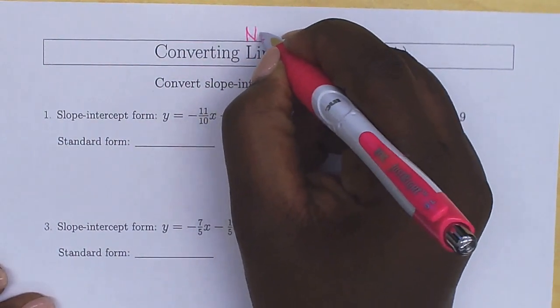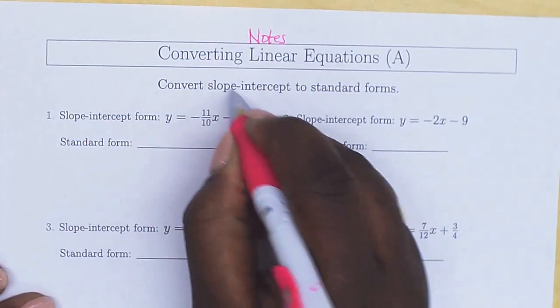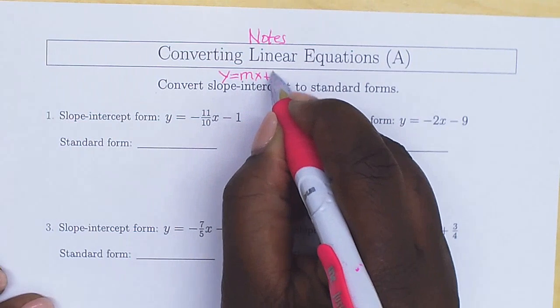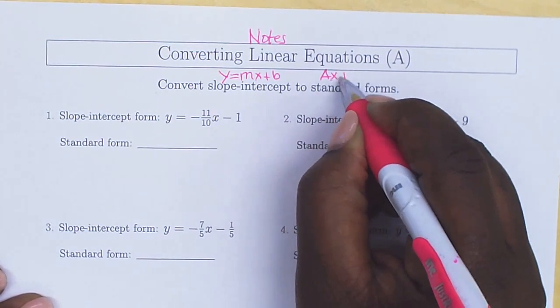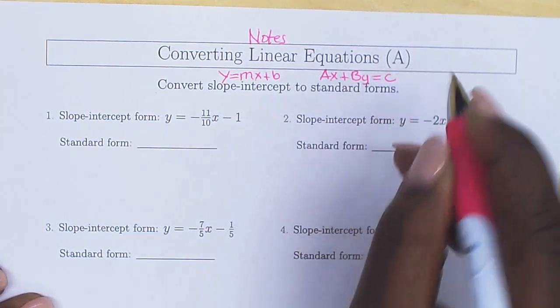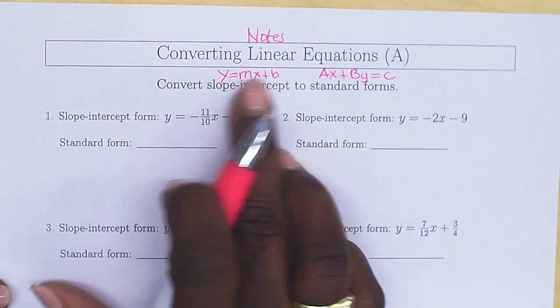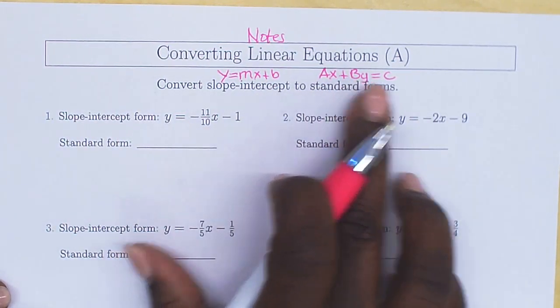These are your notes for converting linear equations from slope-intercept form, which is y equals mx plus b, to standard form, which is ax plus by equals c. We're going to convert from this slope-intercept form, where the slope is next to the x, to the standard form, ax plus by equals c.